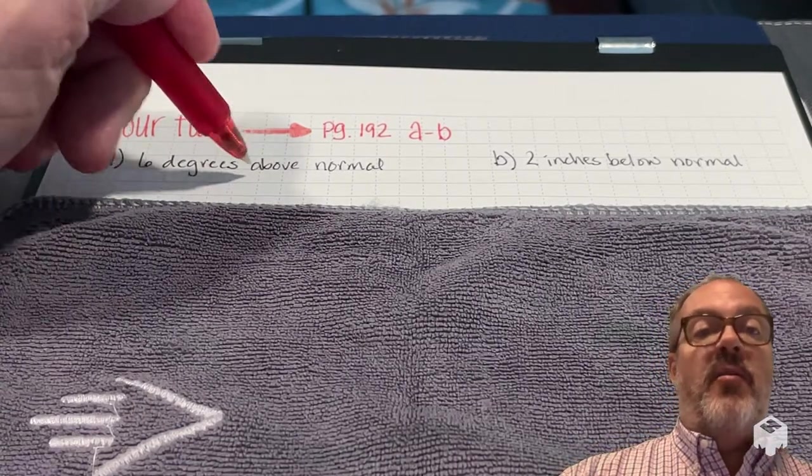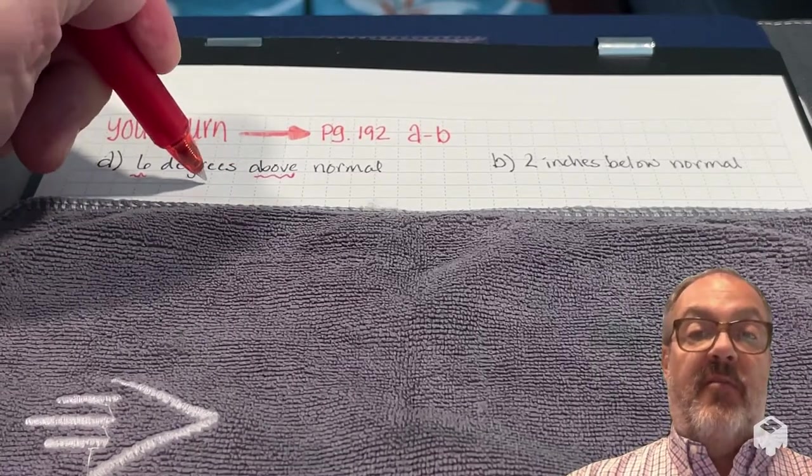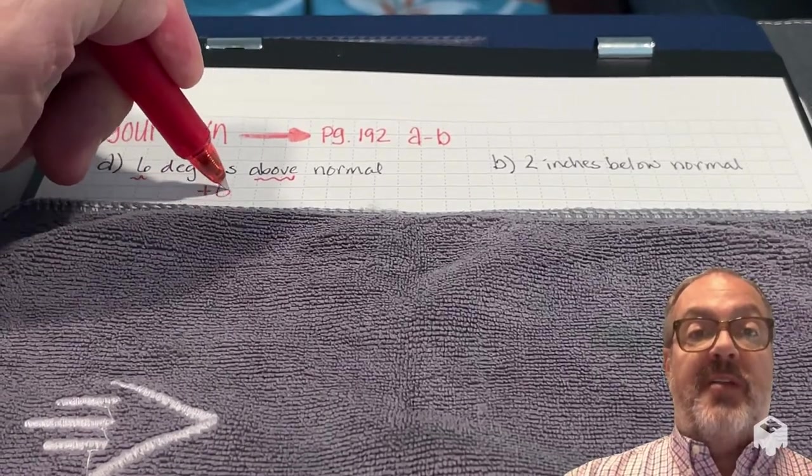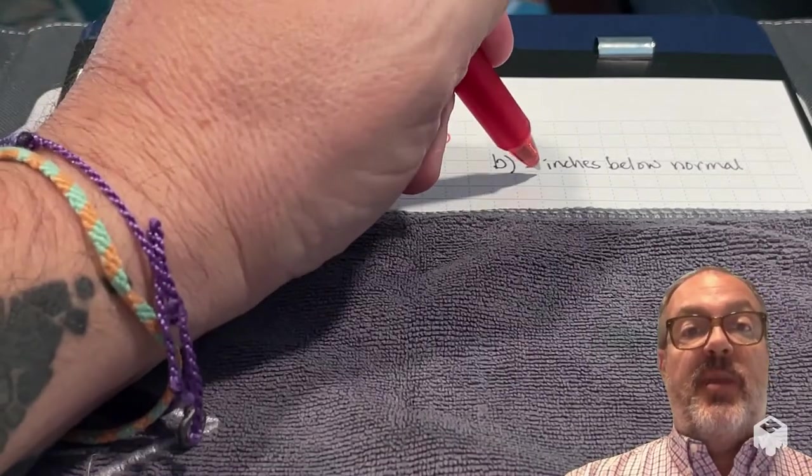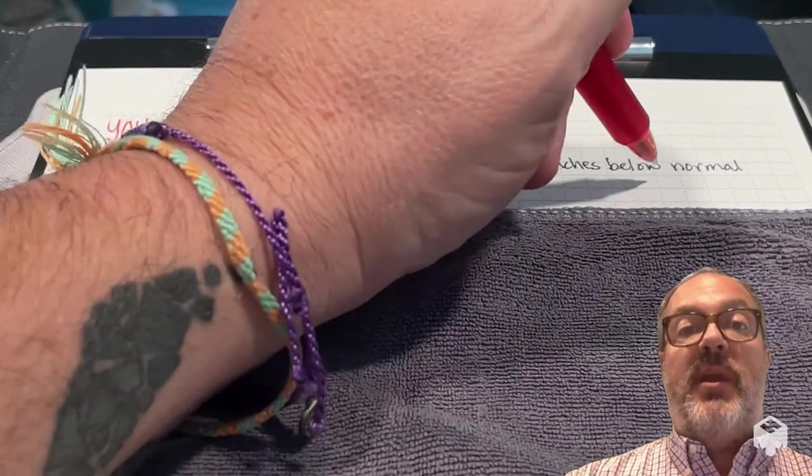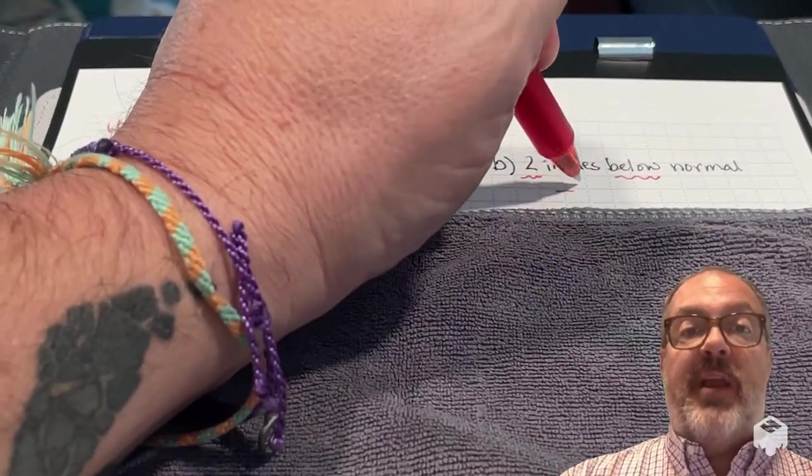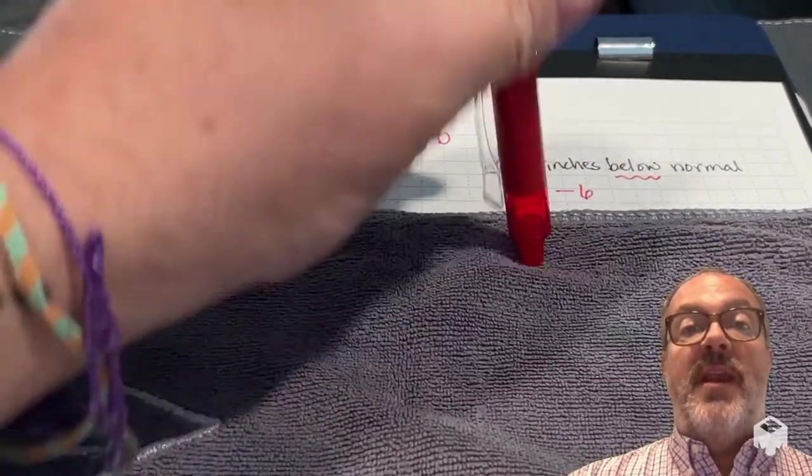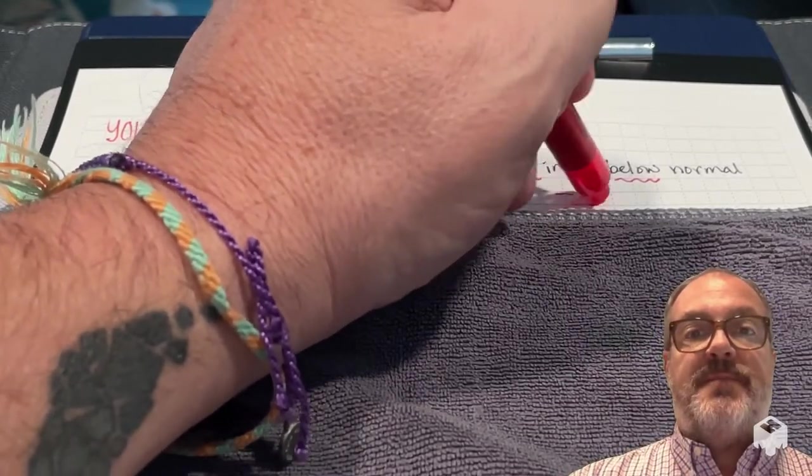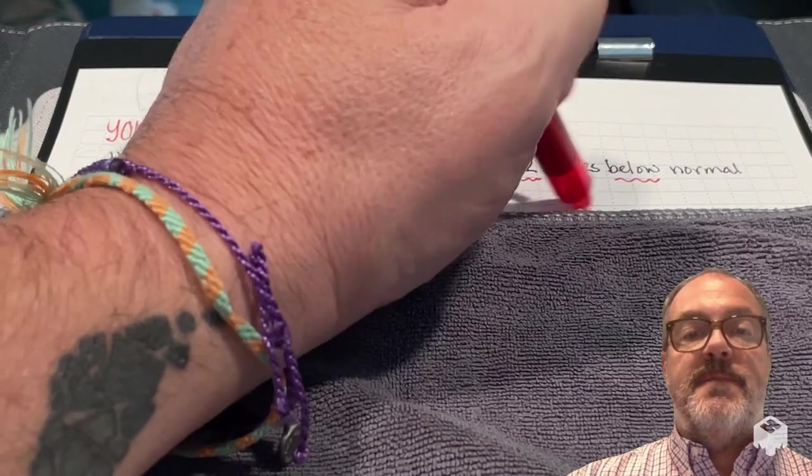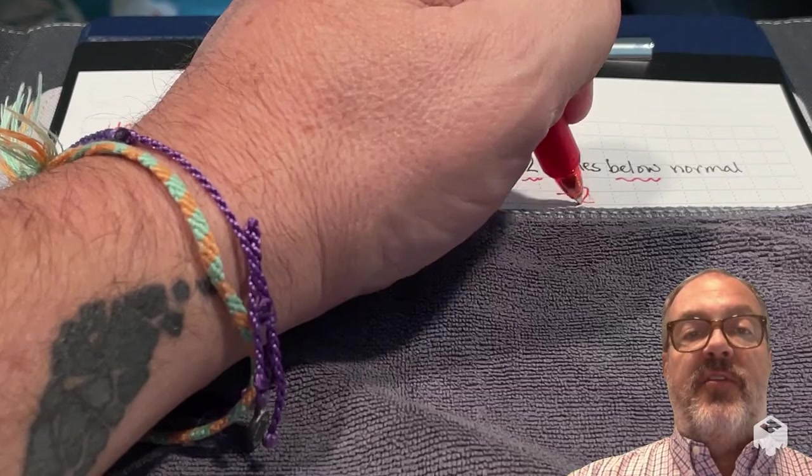So in problem A, we have 6 degrees above normal. So we're going to have above, meaning positive, and 6 would be our digit, so it would be positive 6. And in B, our digit is 2, and we're talking below normal, so I can represent it with the integer negative 2. Oops, made a mistake. So there we go, negative 2.